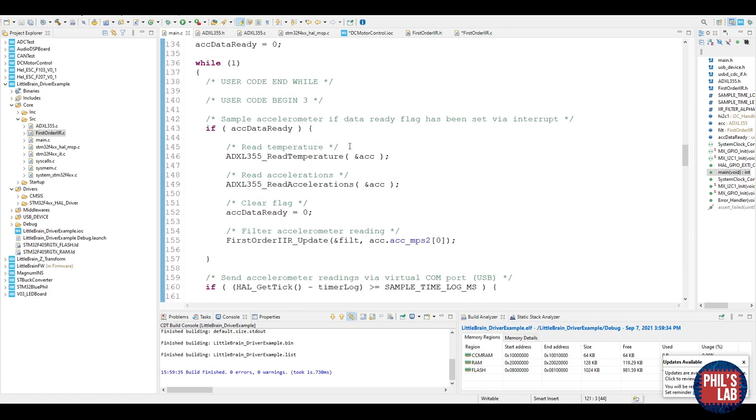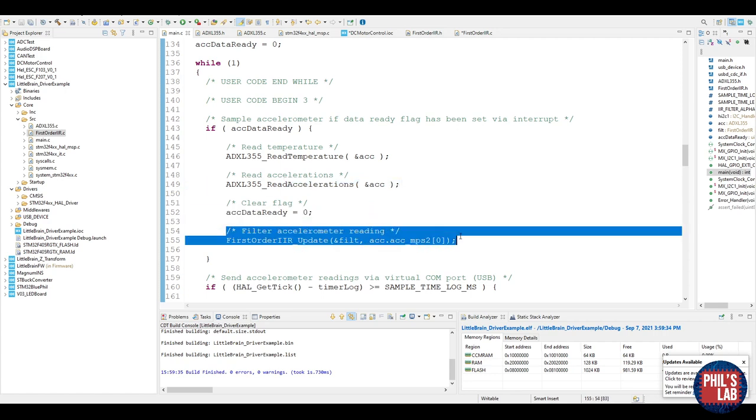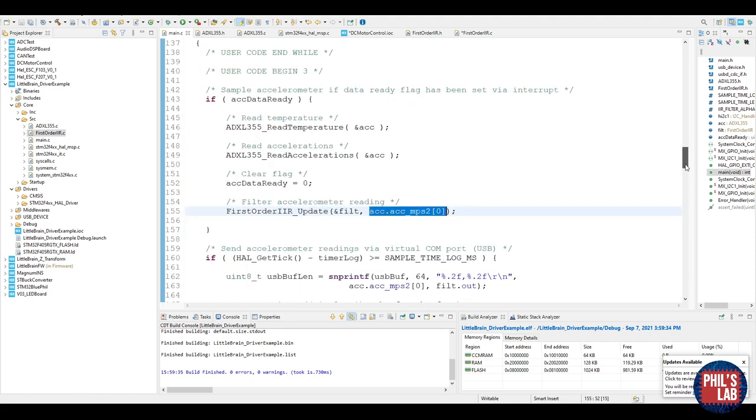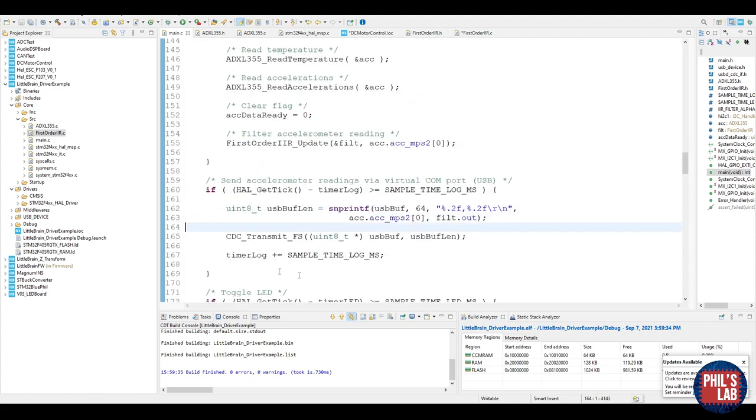This board actually supports USB so I'll be streaming my raw accelerometer data and my filtered accelerometer data via USB and we can plot that and see how the filter is performing. Every time I get an interrupt for my data ready pin this fires and then I read the accelerations and filter my accelerometer reading. For this example I'm just going to filter one axis the x-axis. When it's ready to send the data via the virtual COM port by USB I simply pass the raw accelerometer reading as well as the filtered output.